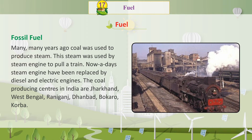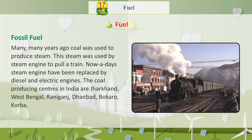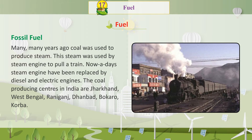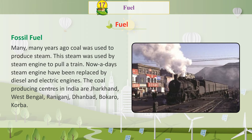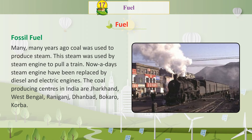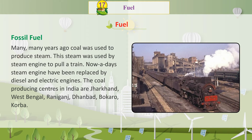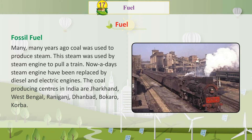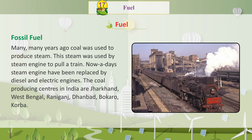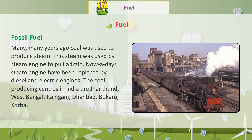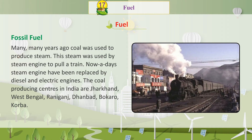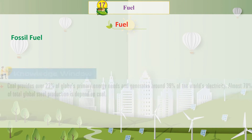Nowadays, steam engines have been replaced by diesel and electric engines. The coal-producing centres in India are Jharkhand, West Bengal, Rani Ganj, Dhanbad, Bukharo, and Korba.